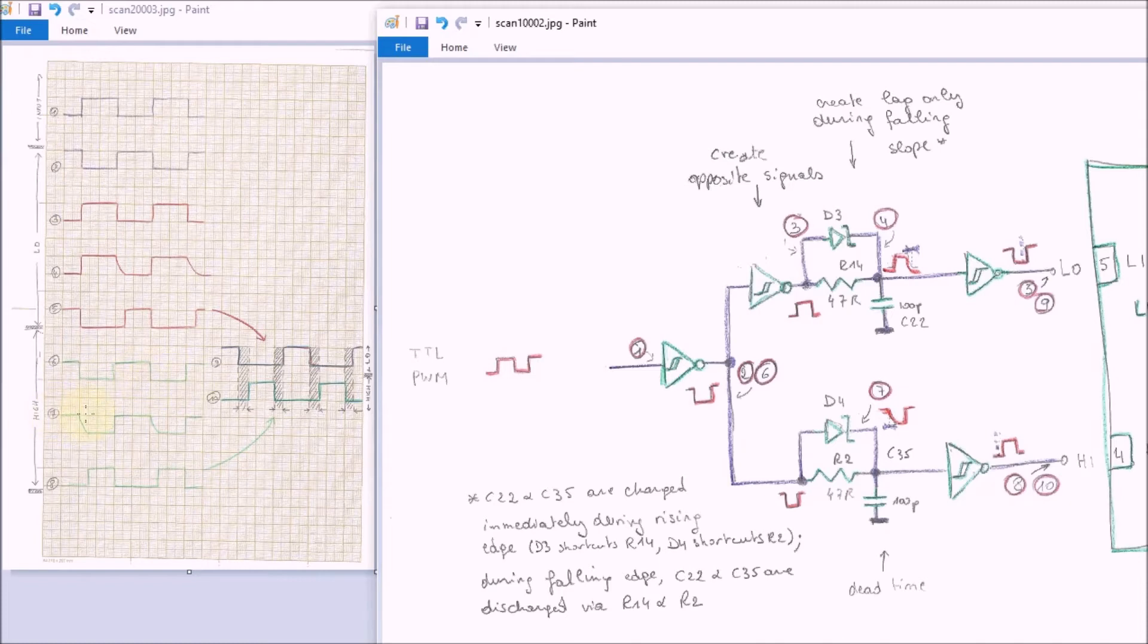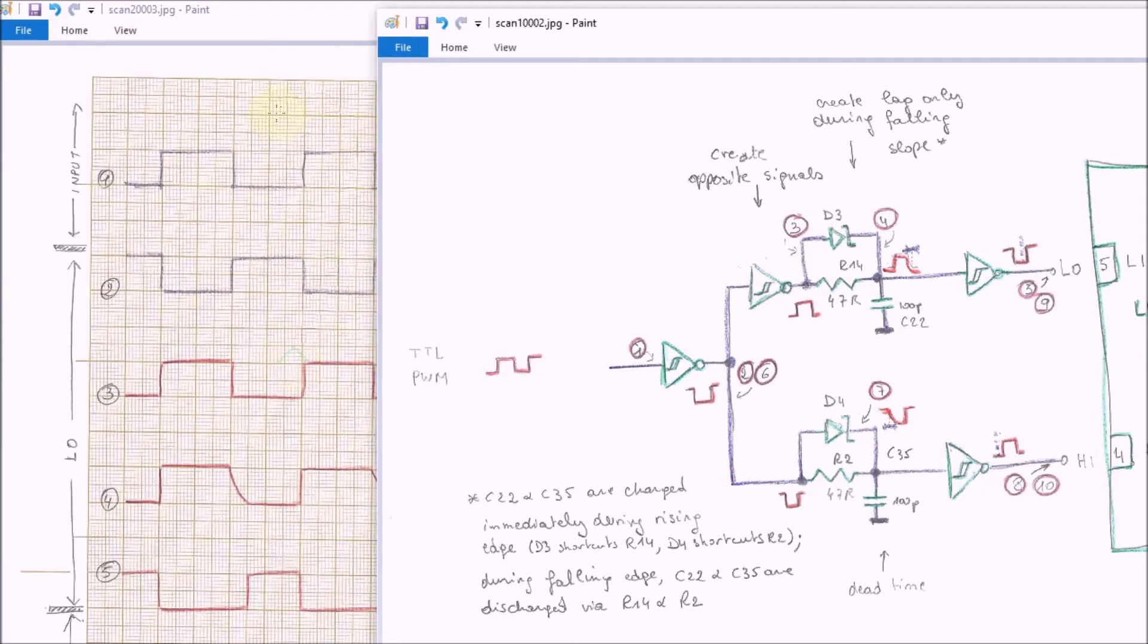The RC circuit does its magic and puts the delays only in the falling edges because the rising edges are bypassed by this diode. And then the last inverter Schmitt trigger also cleans up that signal and gives us a delayed rising edge and an in-sync falling edge.